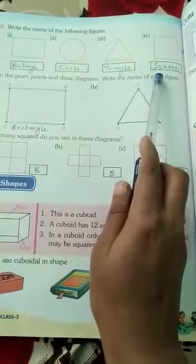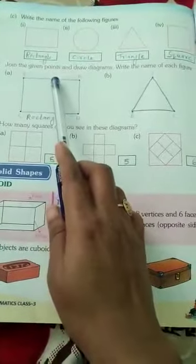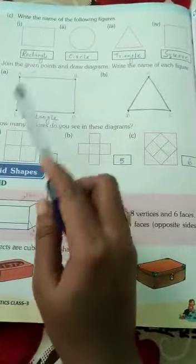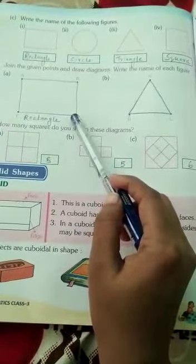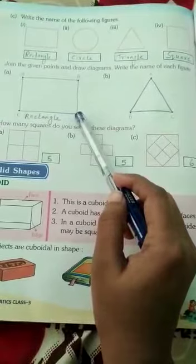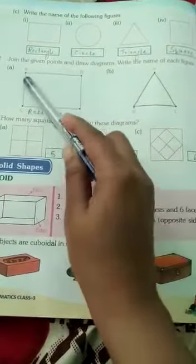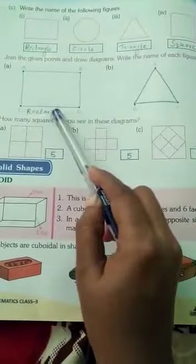Now question second: join the given points and draw diagrams, write the name of each figure. Here one, two, three, four points are given in your book. You will join the points and then write which figure this is. A B milaya, join kia, BD join kia, AC join kia, and CD join kia. This shape is rectangle.